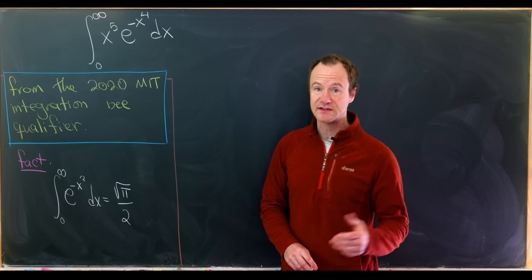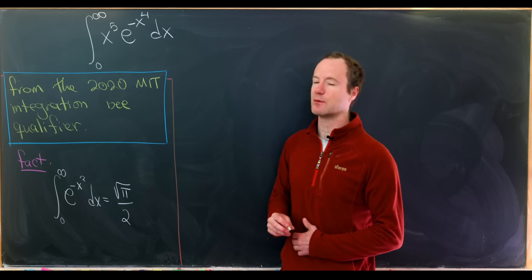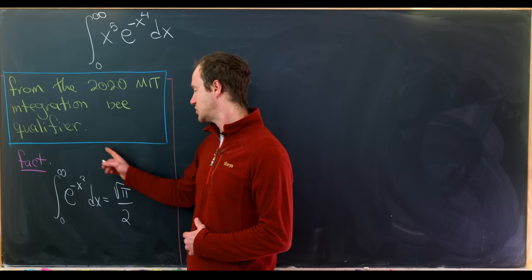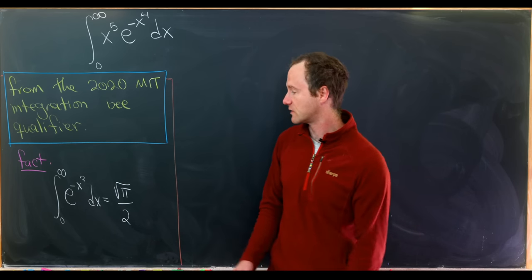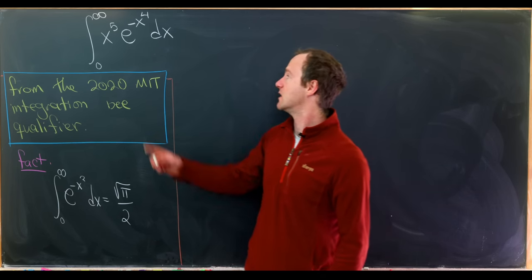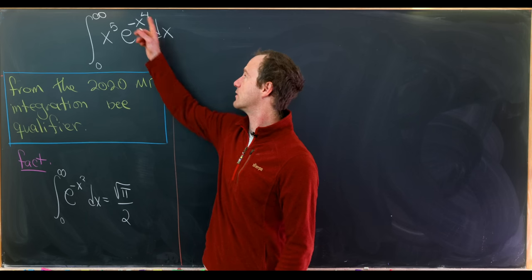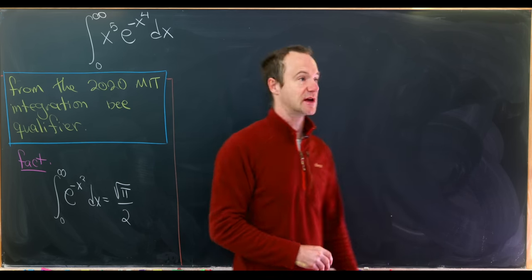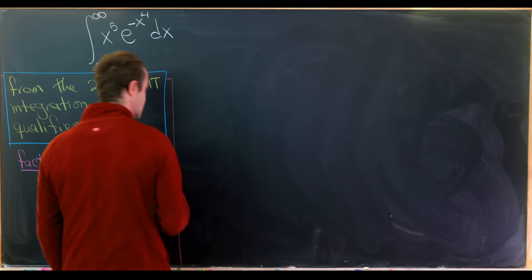There are several ways to derive this. I've actually done a bunch of them on my channel if you'd like to check it out. So if we want to transform our given integral into this form, then we want to look at this stuff in the exponent, this x to the 4th, and view it as something squared. So let's do that.